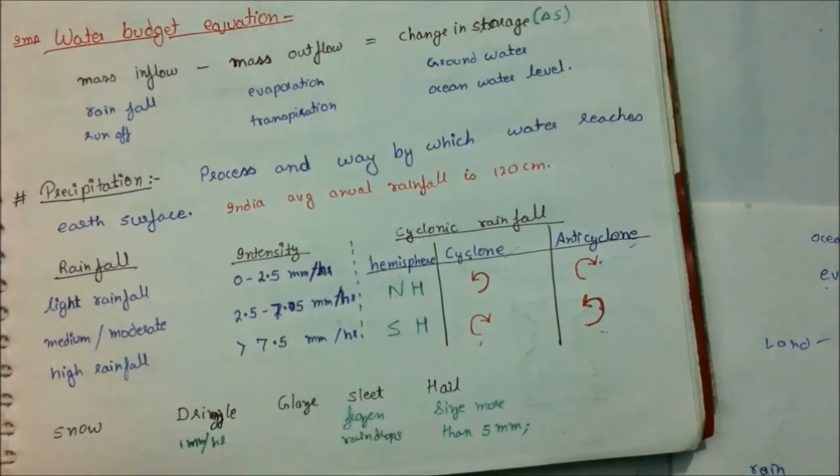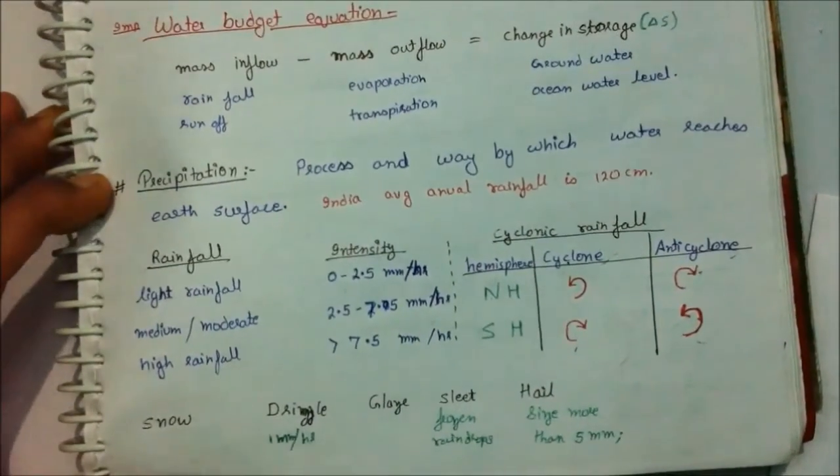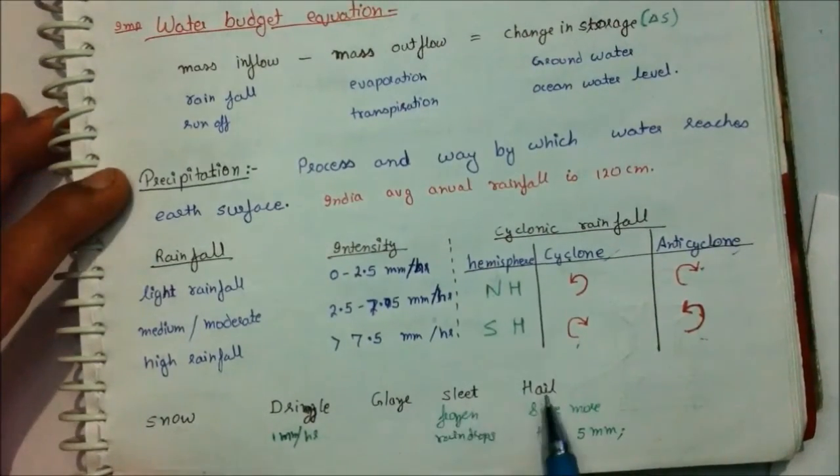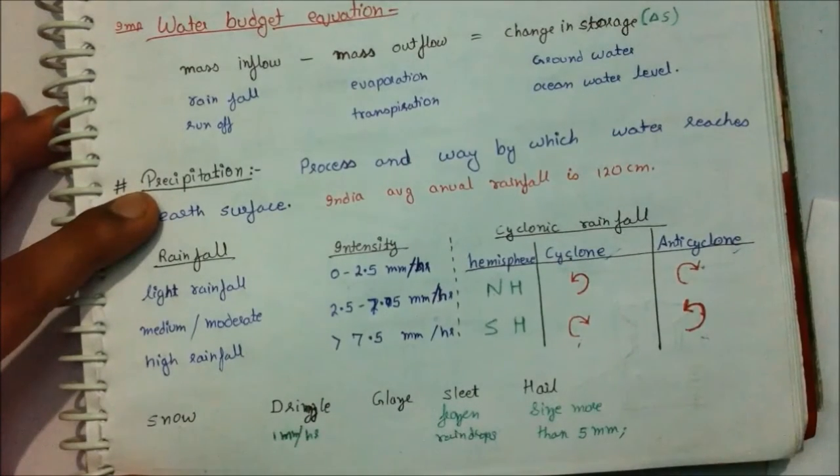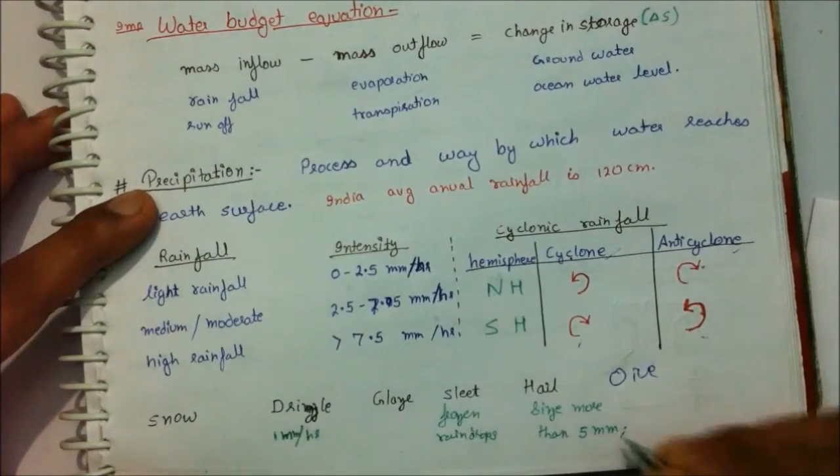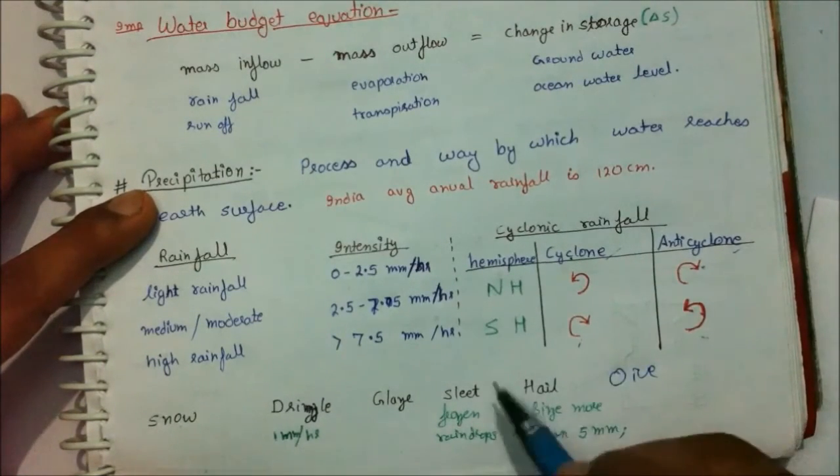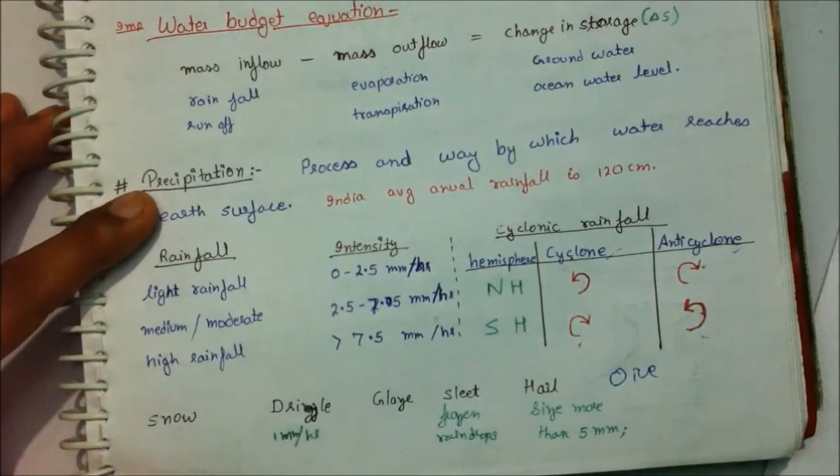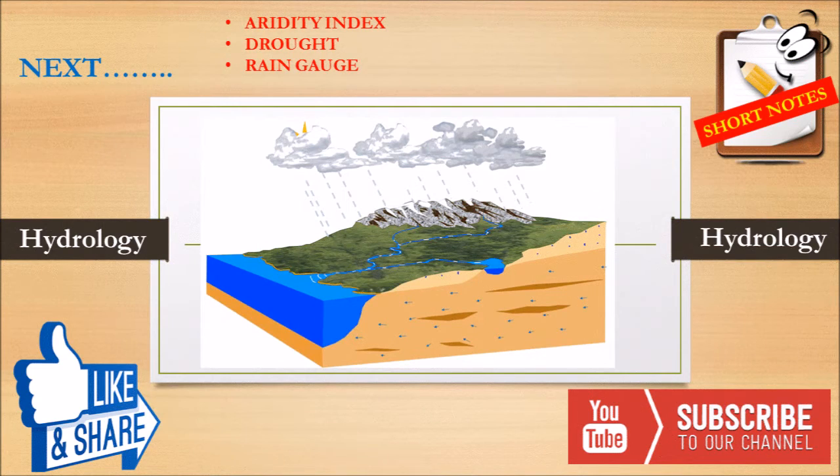Now coming up to the other forms of precipitation: those are snow, drizzle, glaze, sleet, and hail. Hail is a type of rainfall in which small ice droplets of size more than 5 mm fall from the sky. Sleet is the frozen raindrops which are less than 5 mm, and snow.